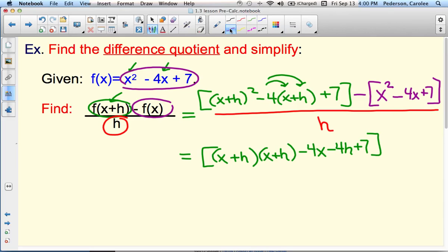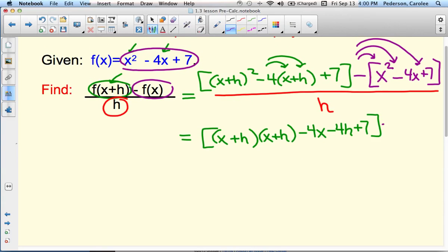In the purple, I have to distribute a negative through. So we have to distribute those, change the sign. So now it becomes a negative x squared, a positive 4x, and then a negative 7. And then again, it's still all over h.